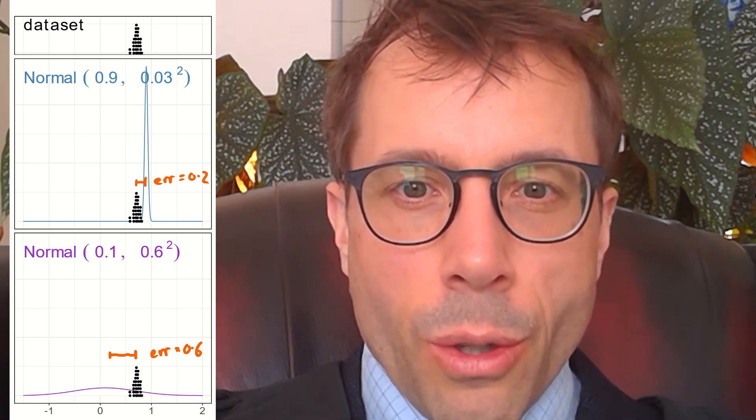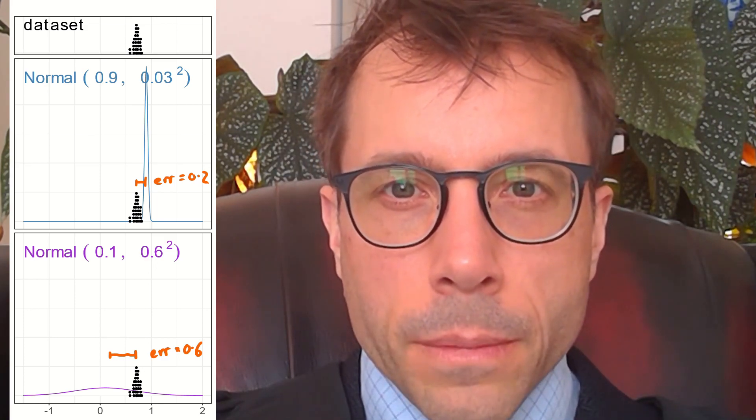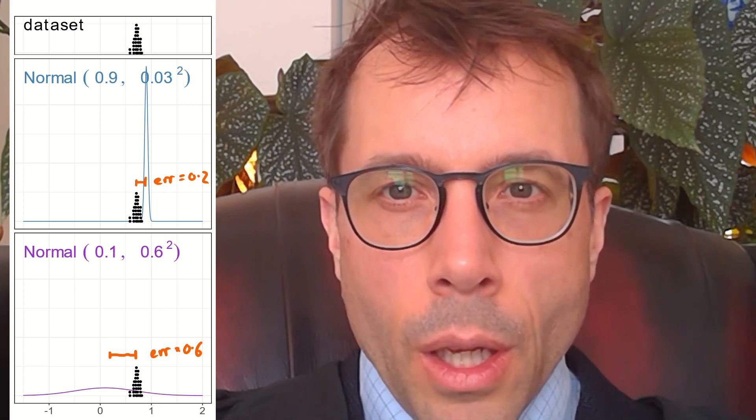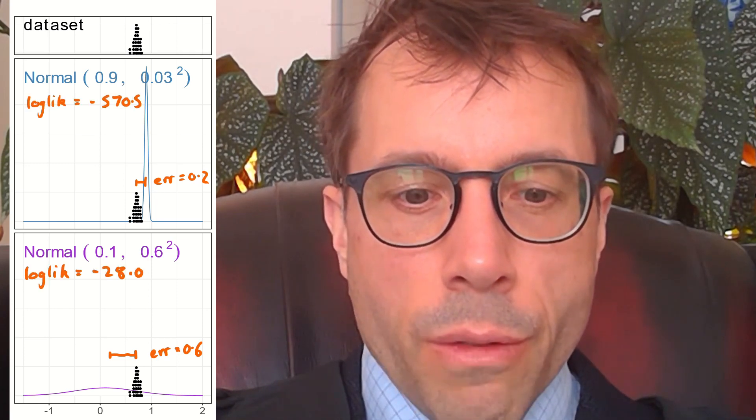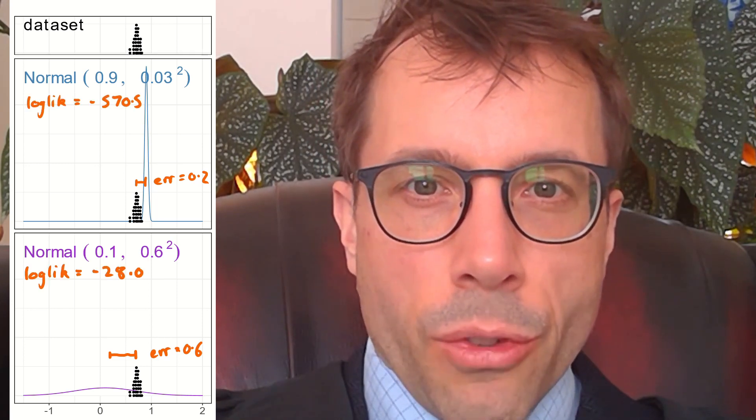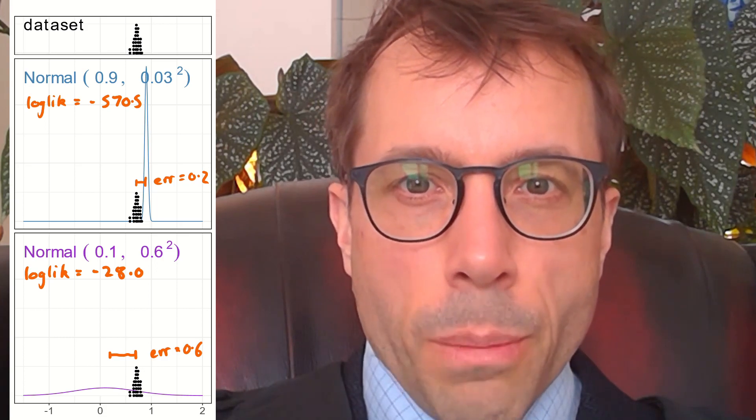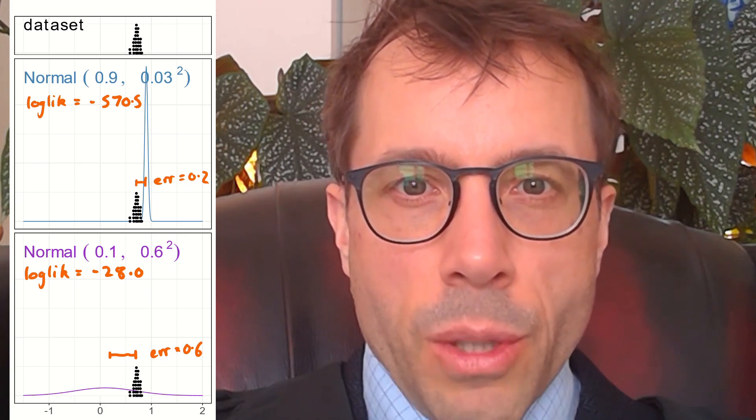I'd say the purple model is better. The purple model has a reasonable chance of producing all the points in the data set, while the blue model has almost zero chance of producing many of the data points because its likelihood is very close to zero. In quantitative terms, the purple model puts the log likelihood of the data set at minus 28.0, while the blue model puts it at minus 570.5.